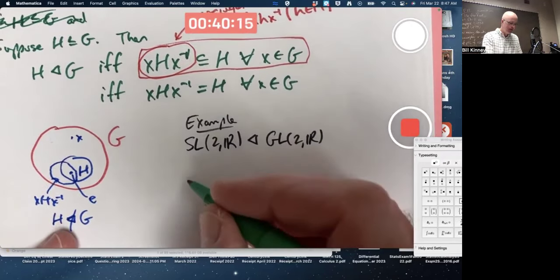Also, if A has determinant one, its inverse will have determinant one by this property. That's meant to help you believe SL(2,R) is a subgroup.